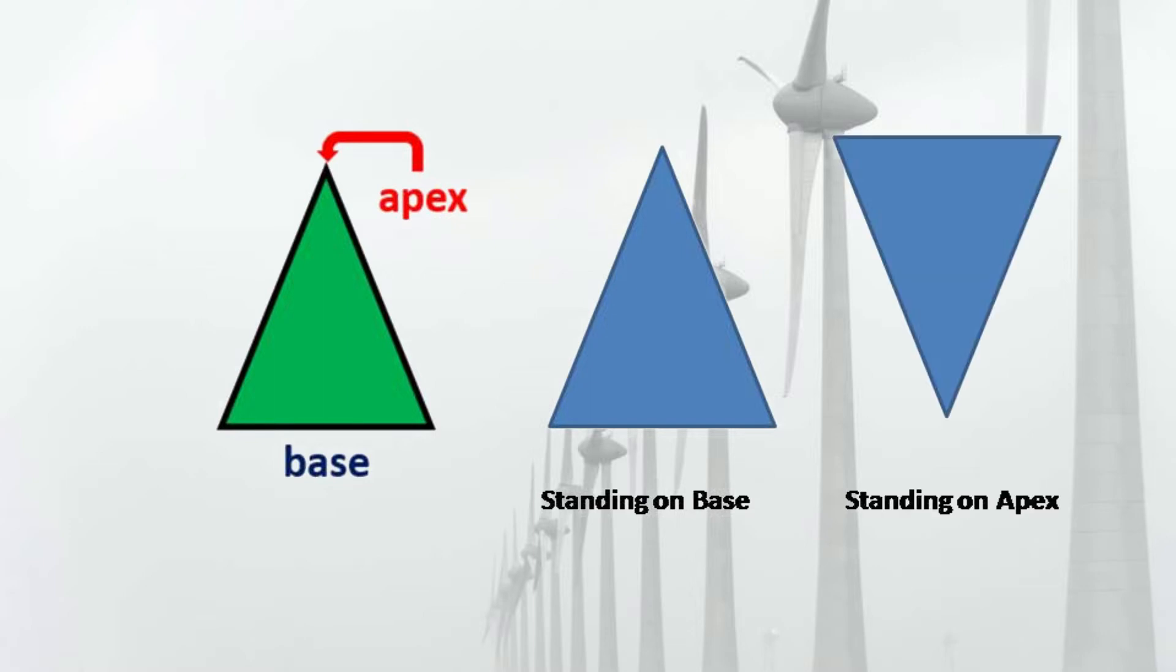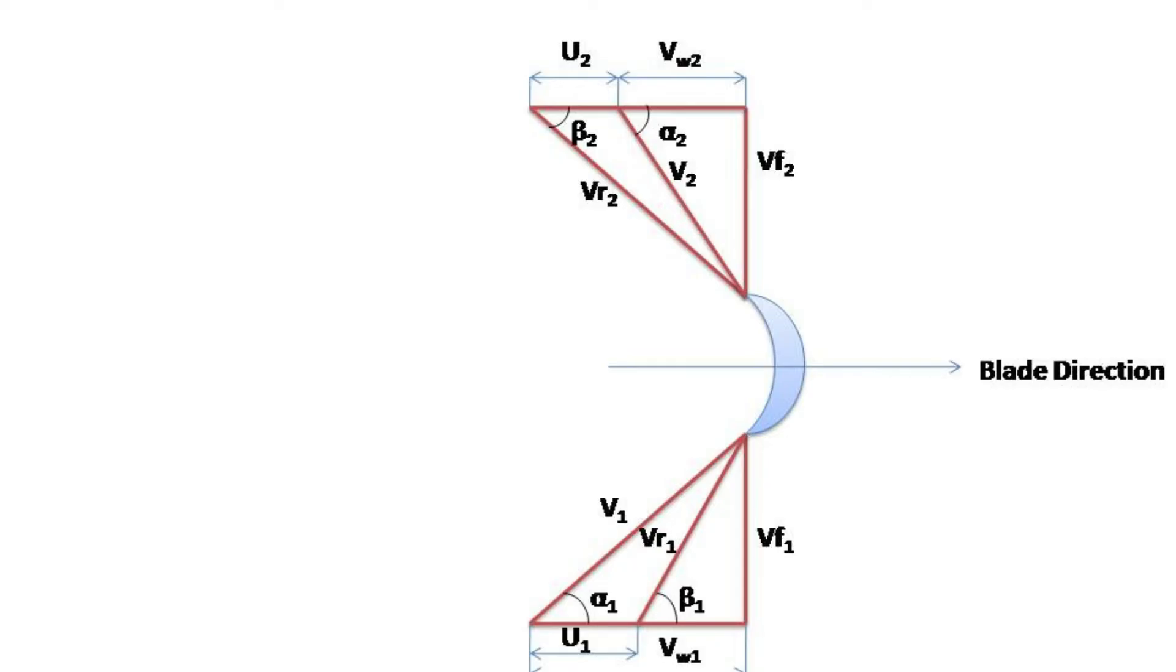Either the triangle must stand on its base or on its apex. In this figure, the inlet velocity triangle is standing on its base, whereas the outlet triangle is standing on its apex.